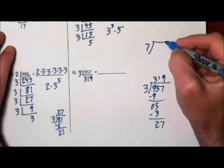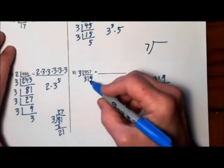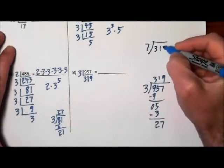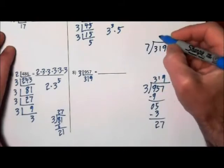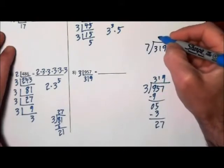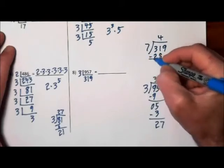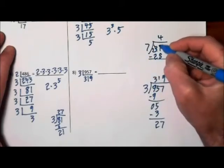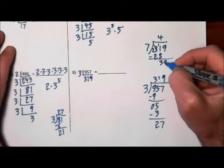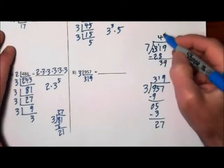So 7, you're just going to have to try it. 7 into 319. 7 goes into 31, 4 times. That gives us 39. 7 won't go into 39, so 7 didn't work.